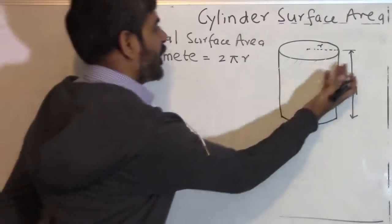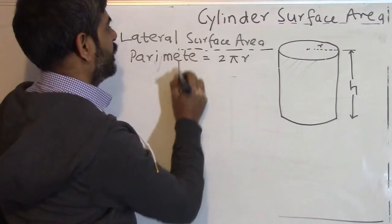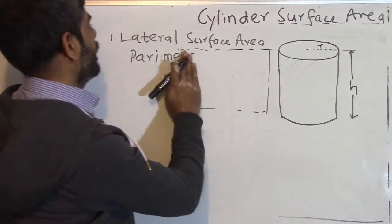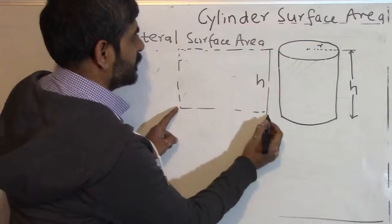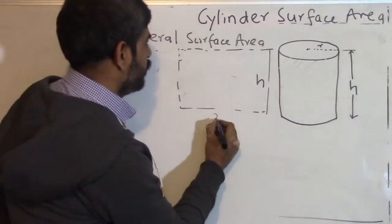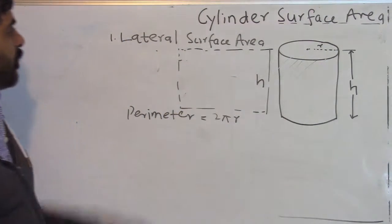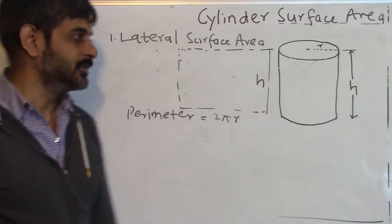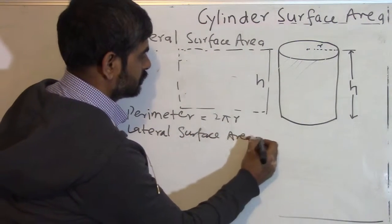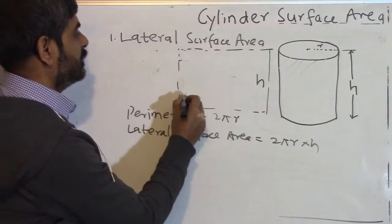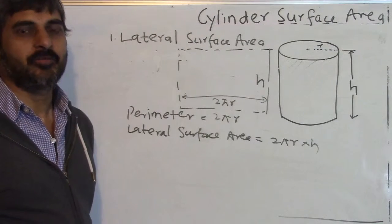If you look closely at the circle of this cylinder, its perimeter is equal to 2πr. So if I open the cylinder, we get a rectangle that has height h and the width is the perimeter of the circle, which is 2πr. The lateral surface area equals the area of this rectangle, which is 2πr × h.